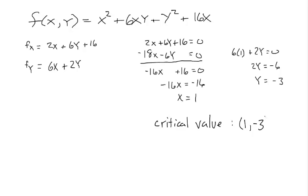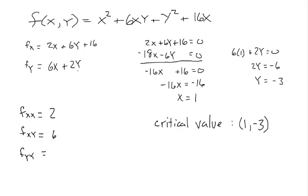Now we need to determine what kind of relative extrema we have. We compute the second-order partials: f_xx, f_xy, and f_yy. Taking the derivative of f_x with respect to x gives f_xx = 2. Taking f_x with respect to y gives f_xy = 6. Taking f_y with respect to y gives f_yy = 2.